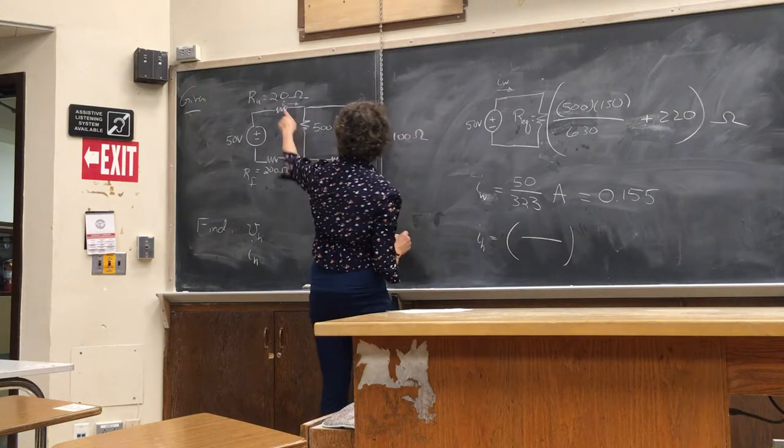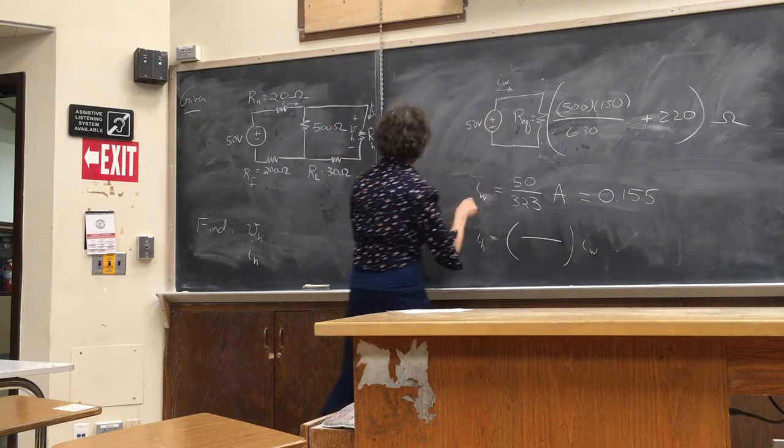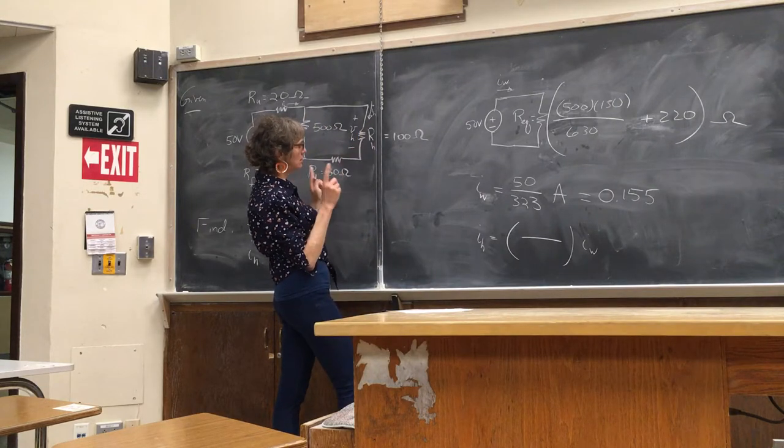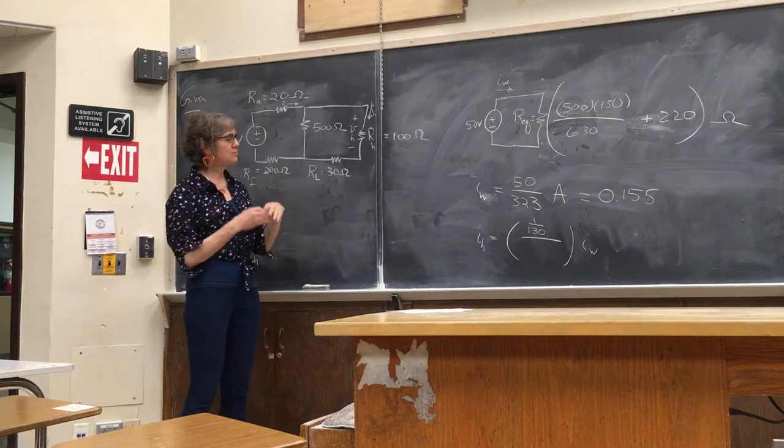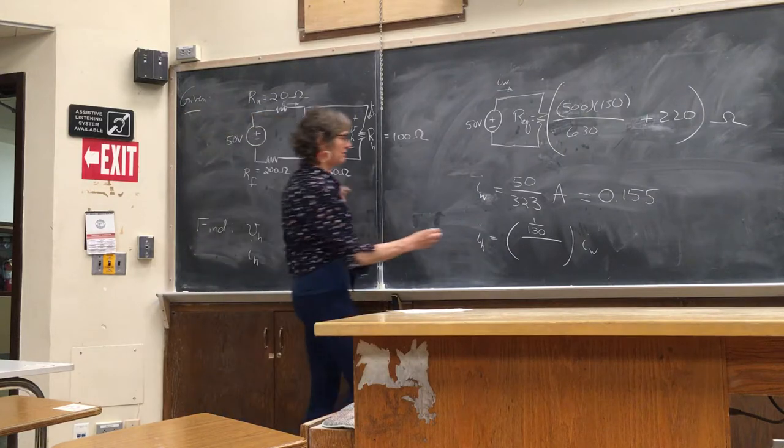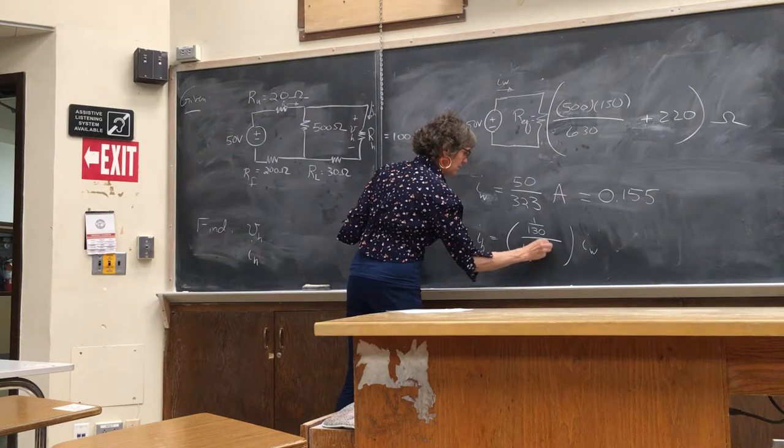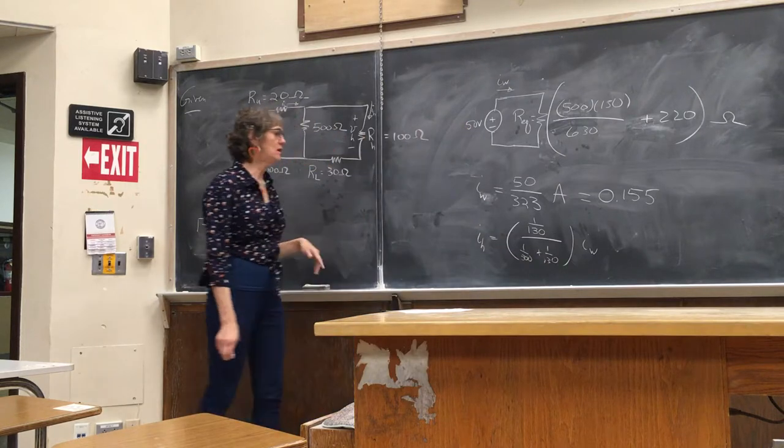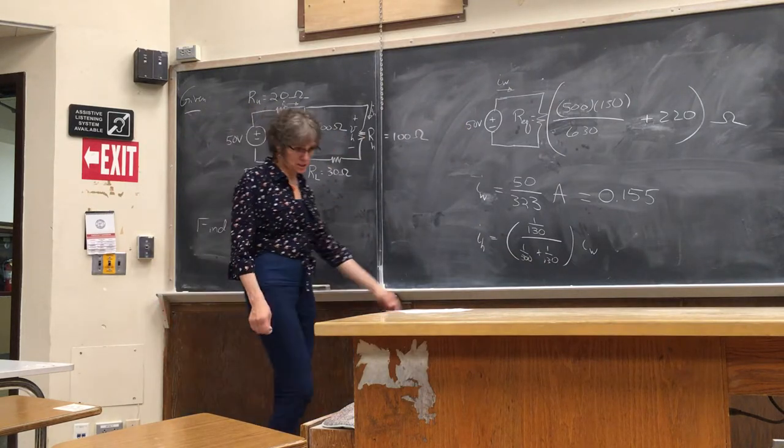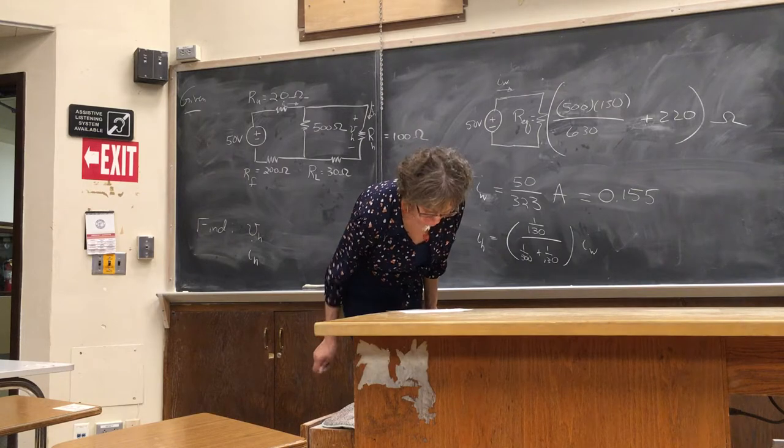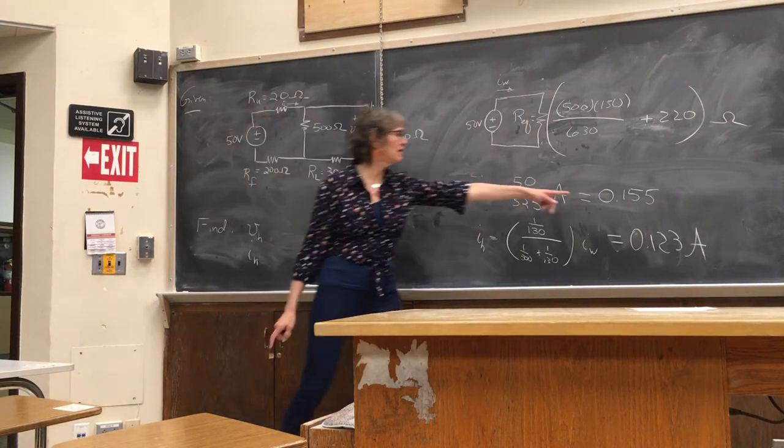Okay, so we can just write down IH, it's current division. It's going to be a fraction of the total. The total is IW, which we just found here. And the fraction is going to be the conductance, which is 1 over 130, divided by the sum of all the conductances. So 1 over 500 plus 1 over 130. And that number, 0.123. When you plug in the value that you got here, you get 0.123.